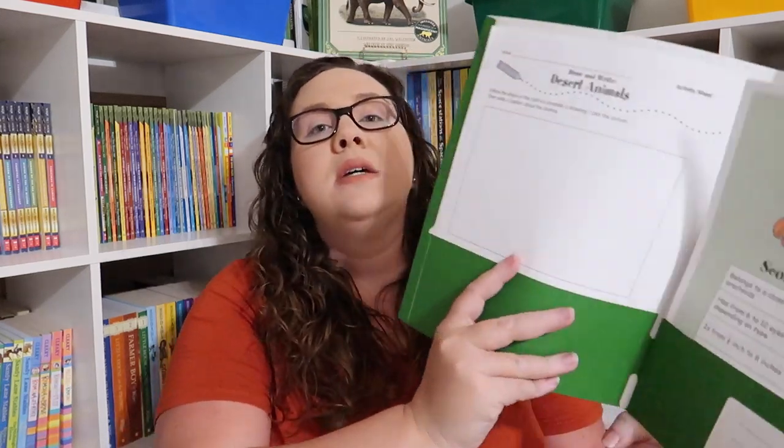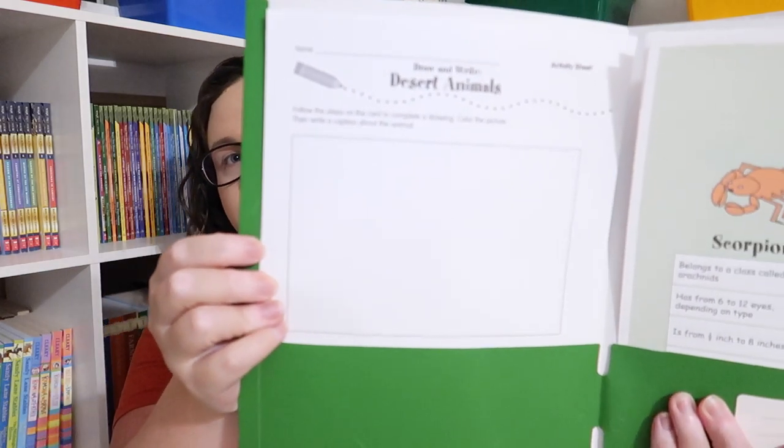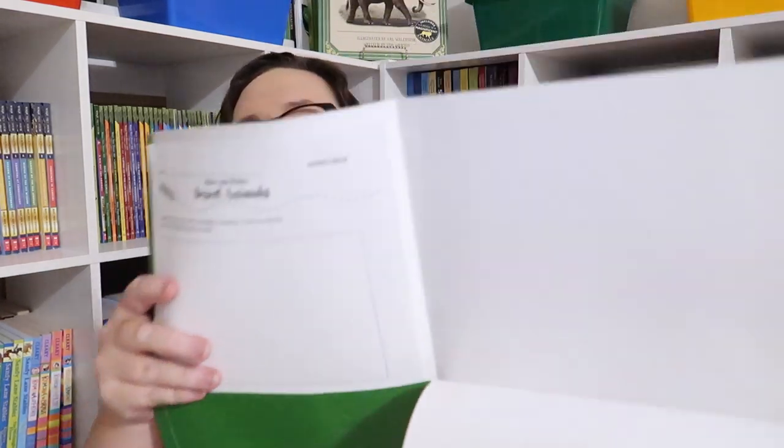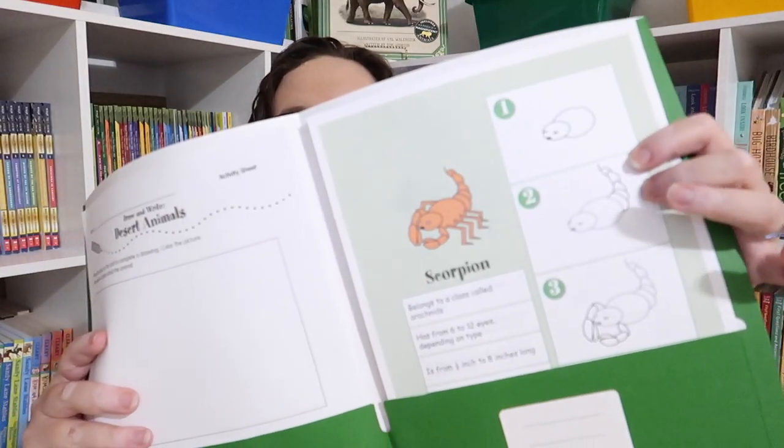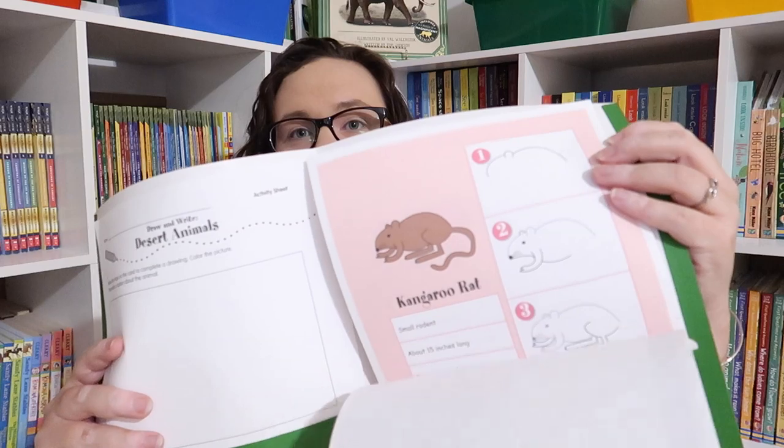For instance, here we have the desert animals. This one is writing. And it's really fun because all you're doing is getting this desert draw and write page right here. And then you can pick one of these multiple different animals and you would draw and write. There's multiple different ones. So each of your kids could get one of those, you could sit down around the table together or on the floor together. And you could do this all together as a group.